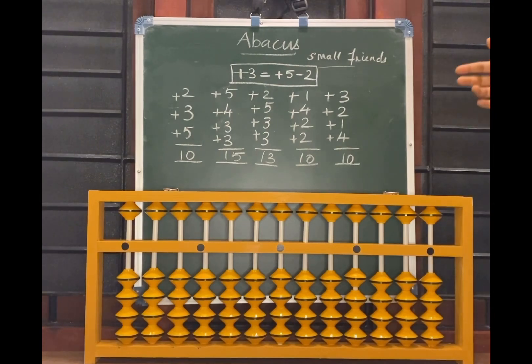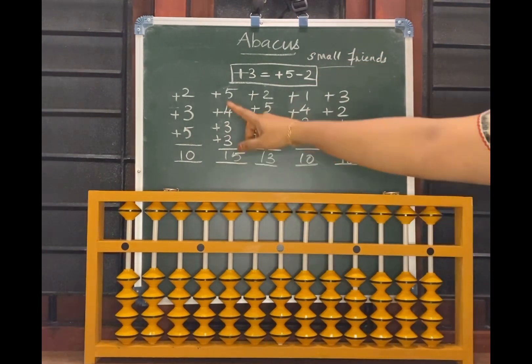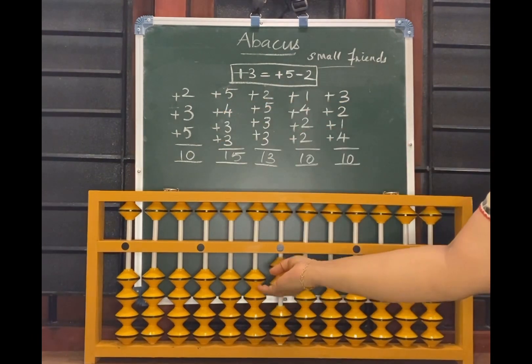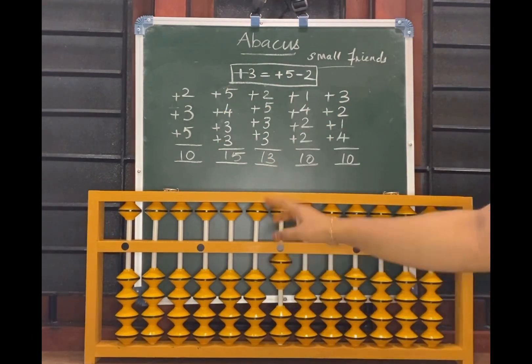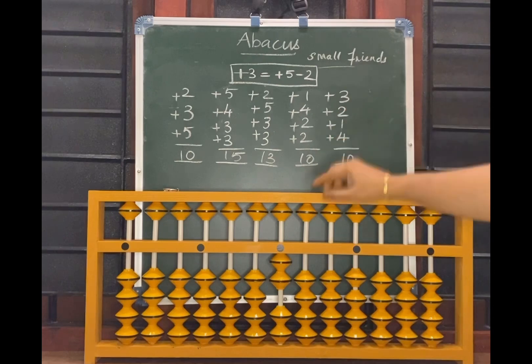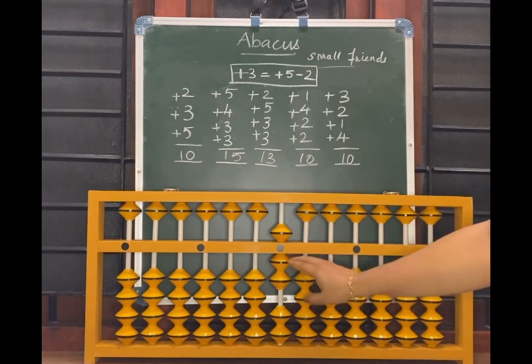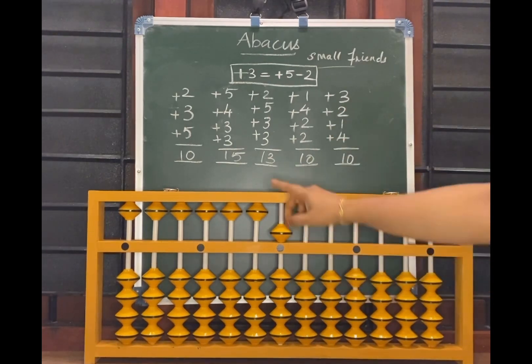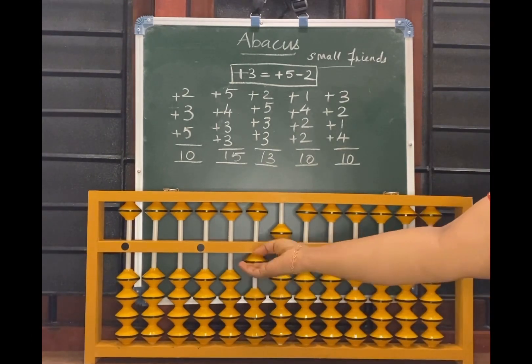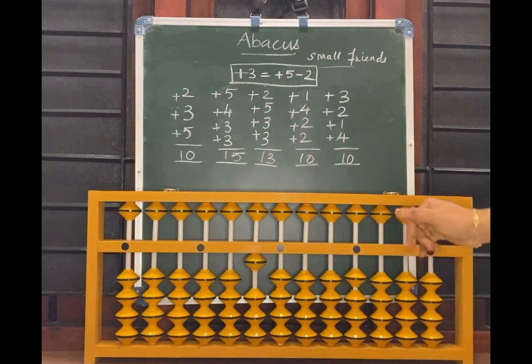Now we are going to apply this formula in some examples. Now see here, 2, 3, how to add 3? Add 5 less 2. Add 5 here, do less 2. 5, what is the formula for 5? Add 10 less 5. What is the answer now? 10.